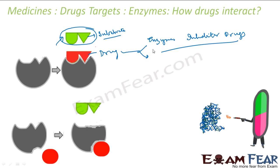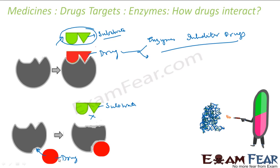In the first case, the enzyme inhibitor drug competes with the natural substrate for attachment to the active site. In the second case, the drug — the red one — instead attaches to a different location called the allosteric site. By binding to the allosteric site, the drug changes the shape of the enzyme. Since the shape is changed, the natural substrate won't be able to recognize or bind to the enzyme. Since shape is mandatory for enzyme function, the enzyme essentially becomes non-functional.